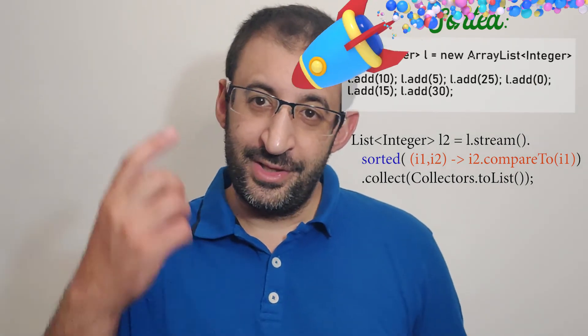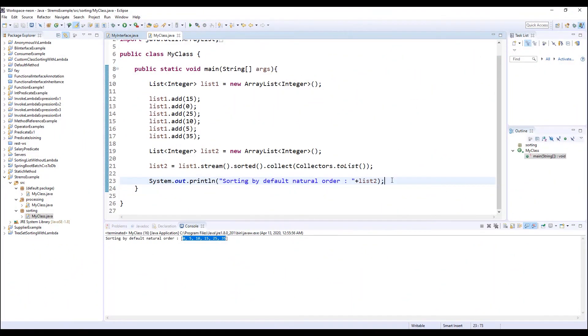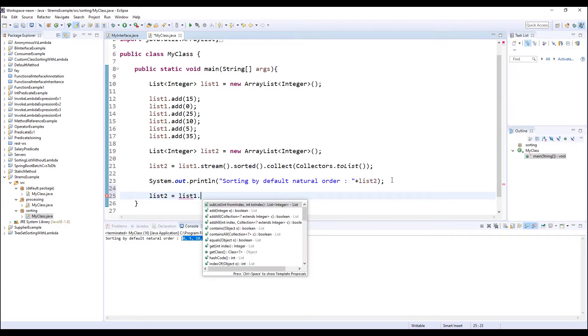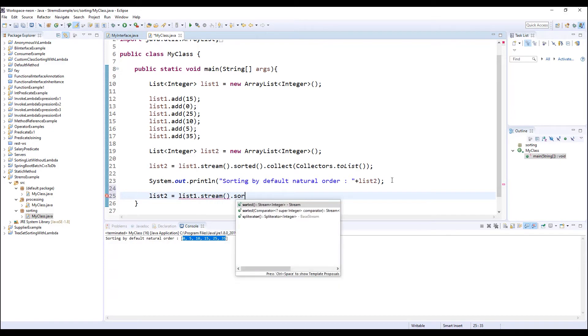Let's sort our list by our custom sorting order. List2 equals list1.stream().sorted with a Comparator. The Comparator is (e1, e2) -> e1.compareTo(e2), but this is the default sorting order. To reverse it, I can make e2.compareTo(e1) or -e1.compareTo(e2). Then collect with Collectors.toList().